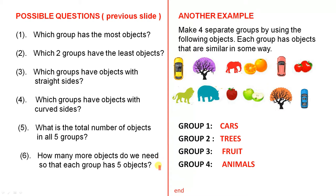Now here's a very interesting question. How many more objects do we need so that each group has five objects? This is a very good one. It'll be interesting to see how they go with that one.